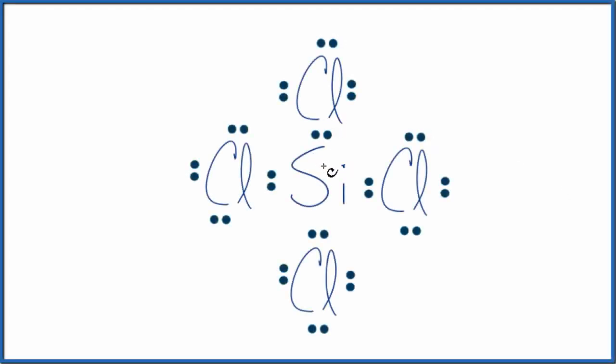In this video we'll determine the molecular geometry and bond angles for SiCl4, silicon tetrachloride. So the first thing we need is a valid Lewis structure. This is the Lewis structure for SiCl4.